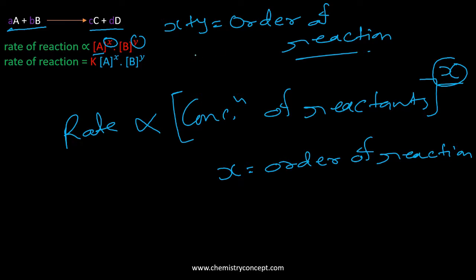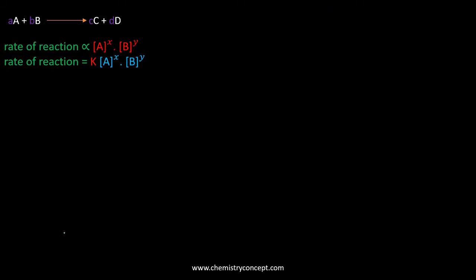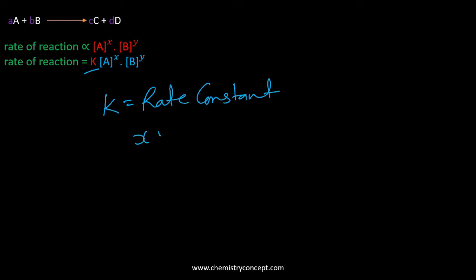The sum x + y is the order of the reaction. The order of reaction is the sum of the stoichiometric coefficients in the rate law. Removing the proportionality sign, we get a proportionality constant k, which is known as the rate constant.